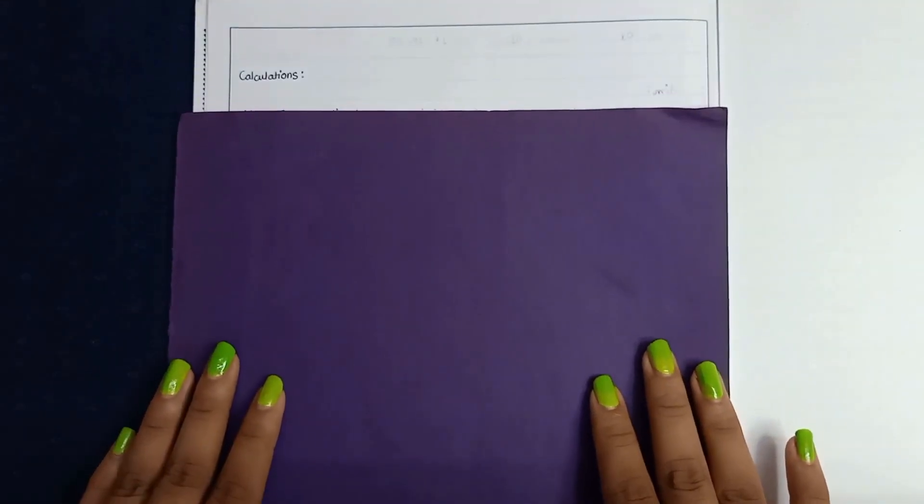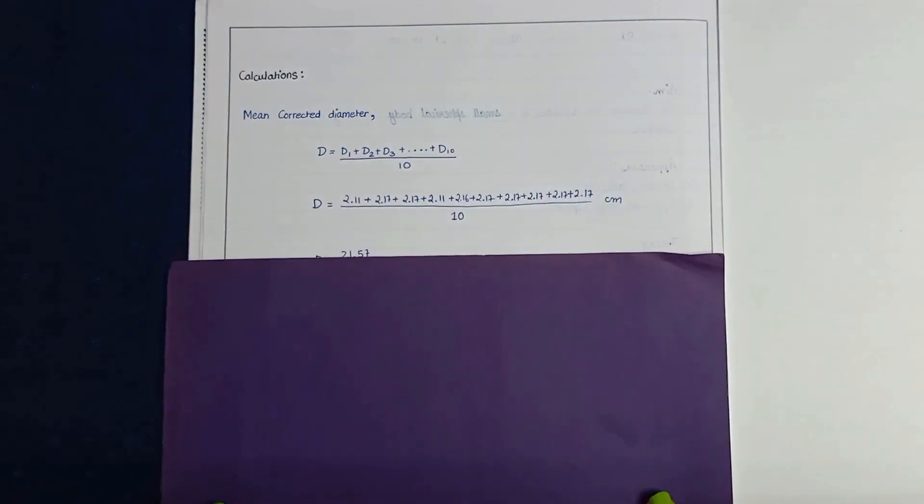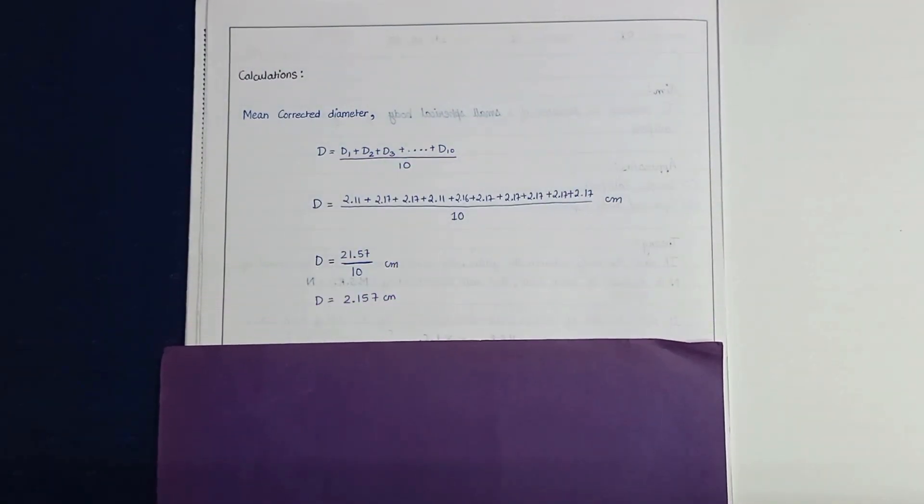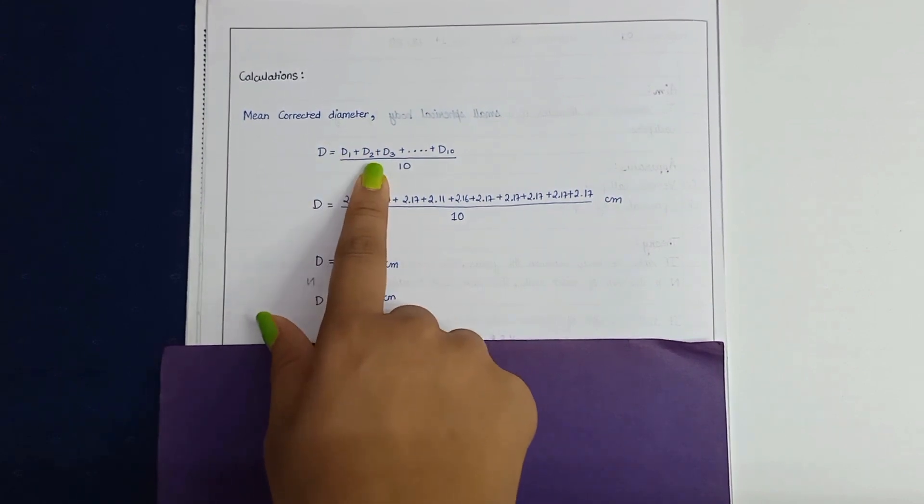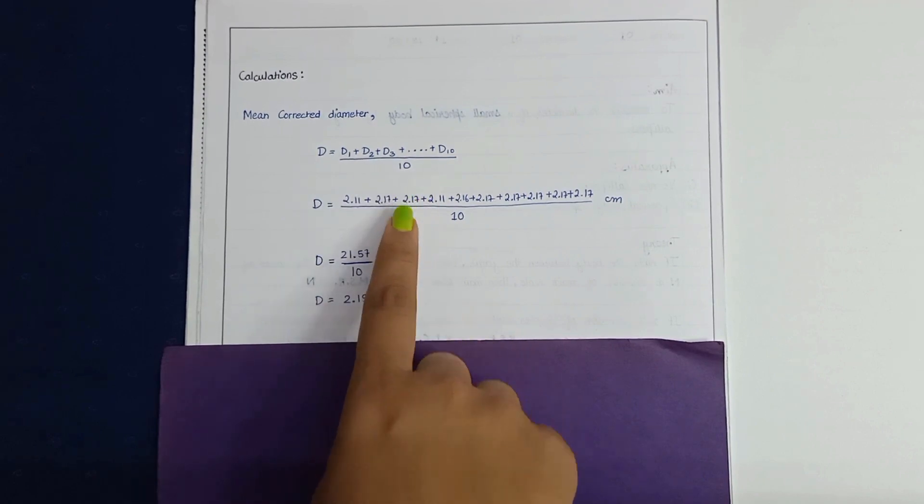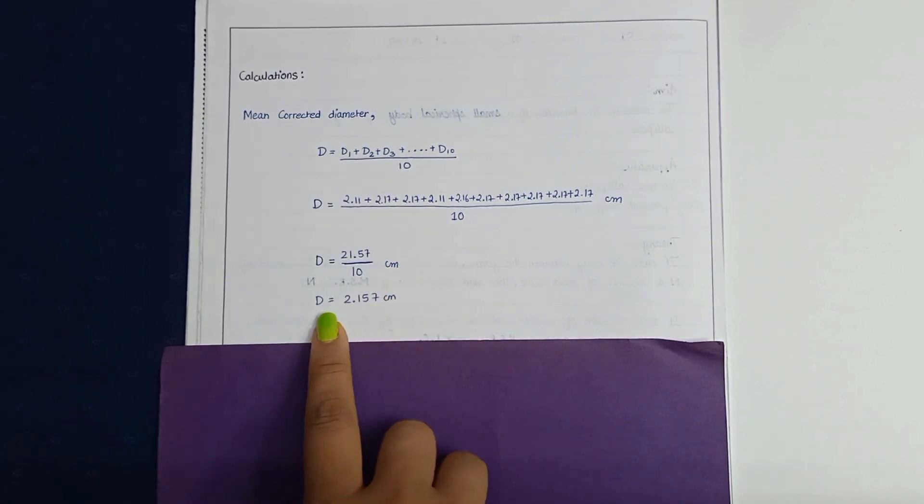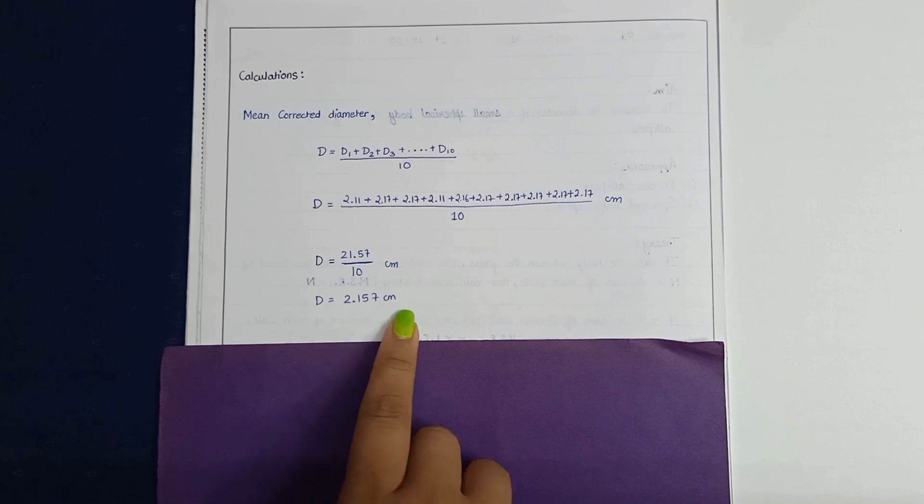Now, coming to the calculation part. Mean corrected diameter. The formula for this is D equals to sum of all observations divided by total number of observations. Here, we get the result: D is equal to 2.157 cm.